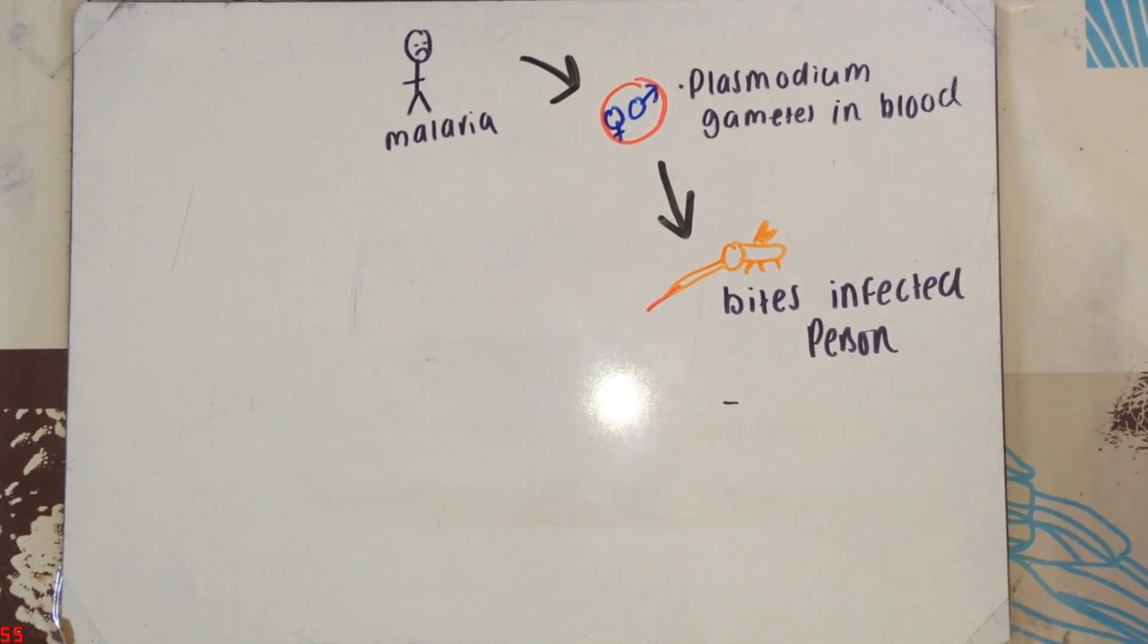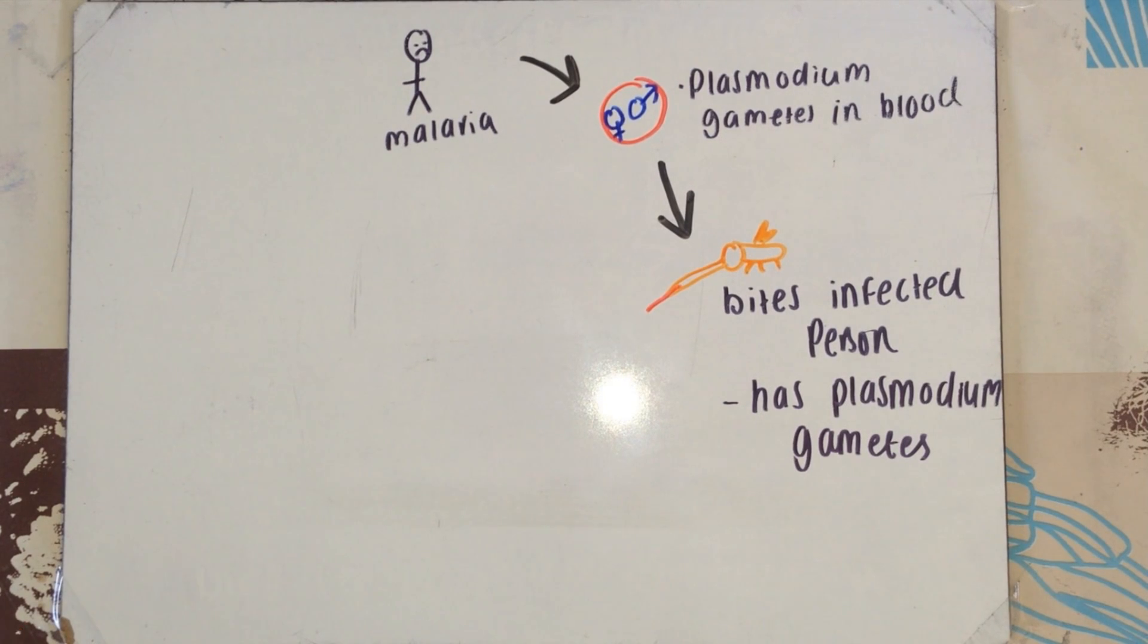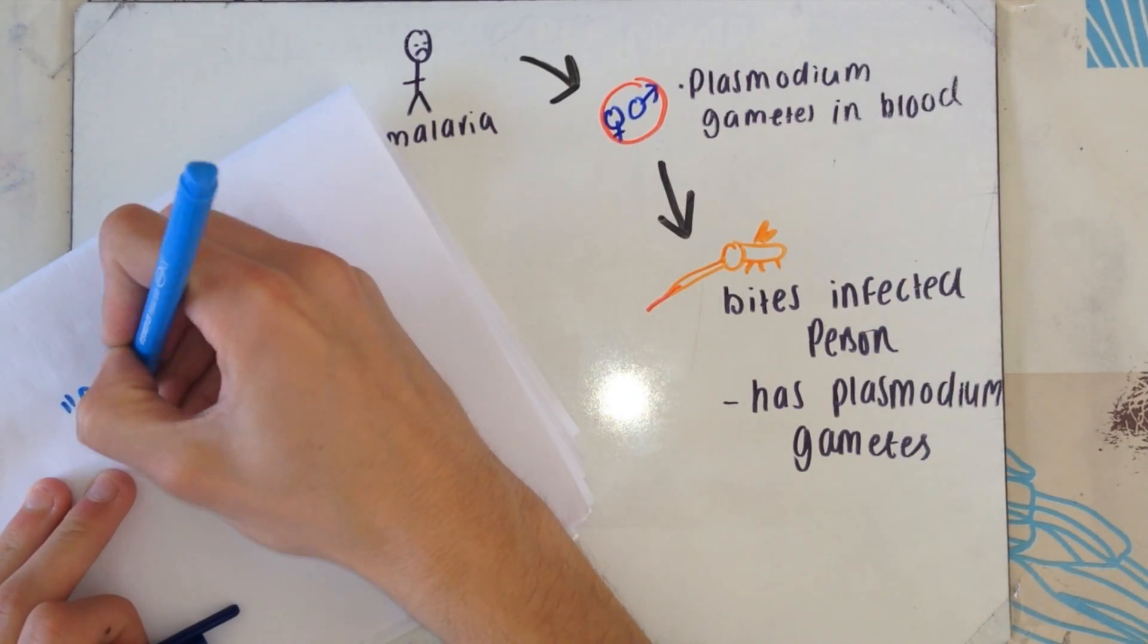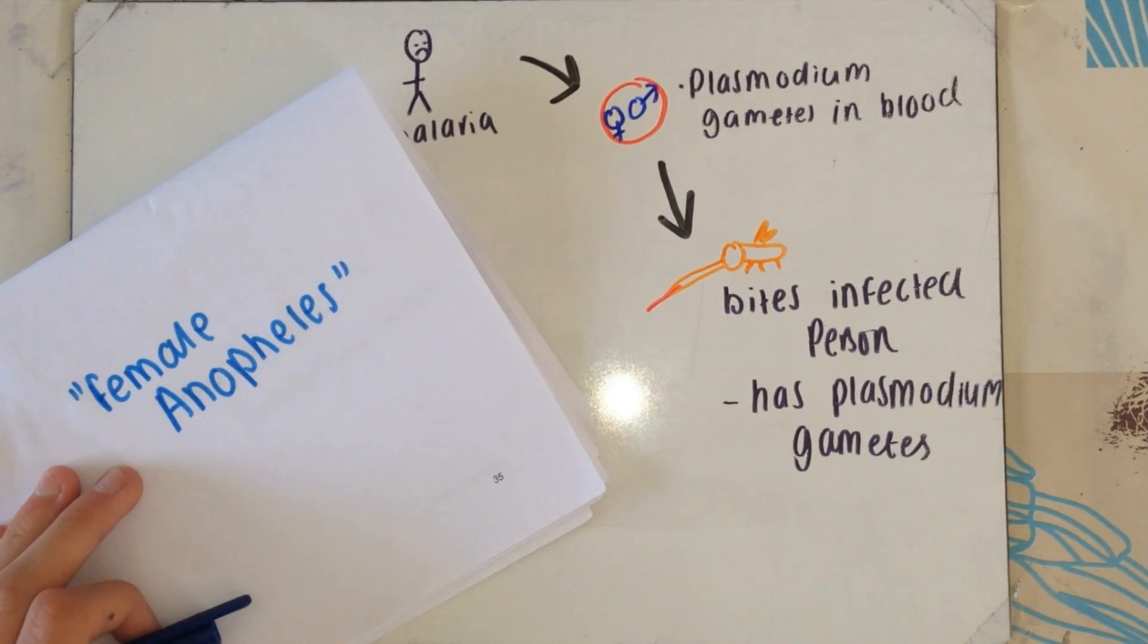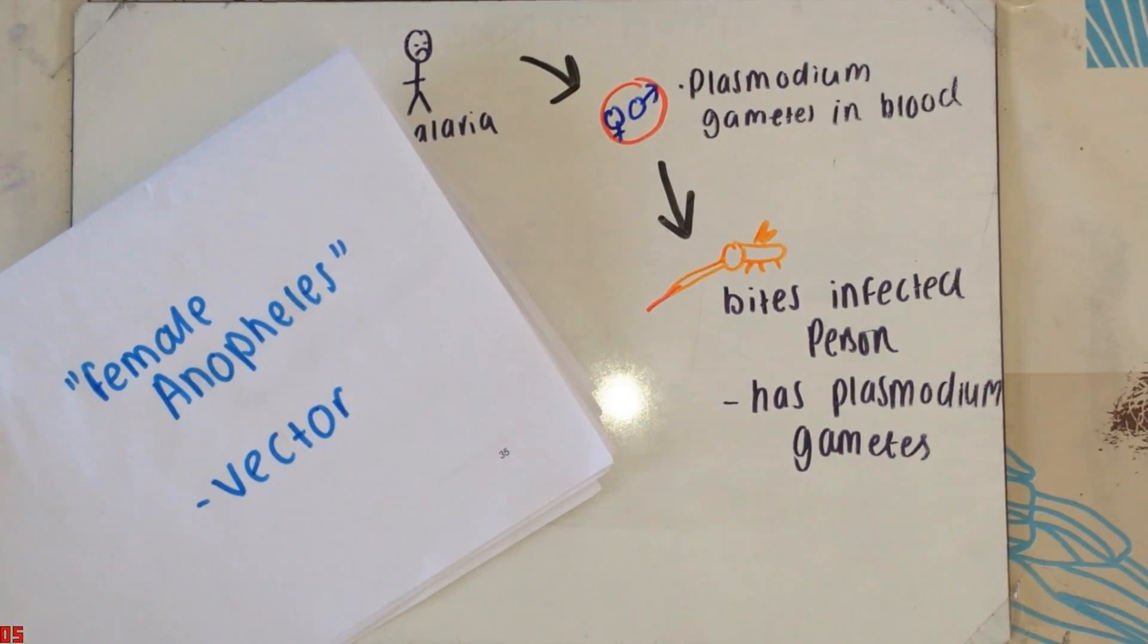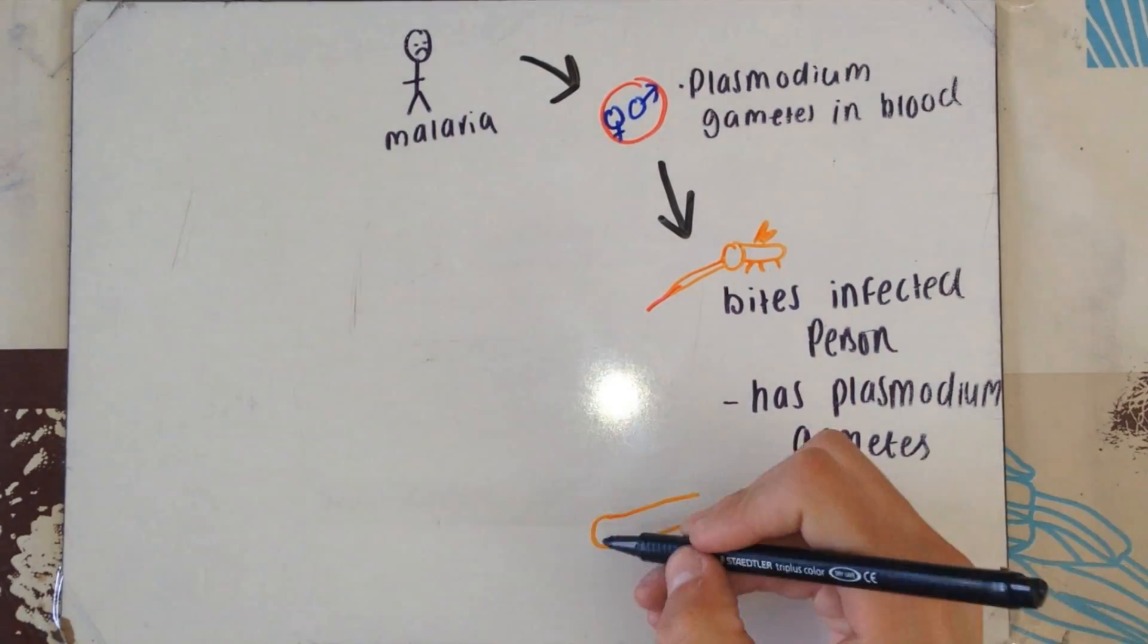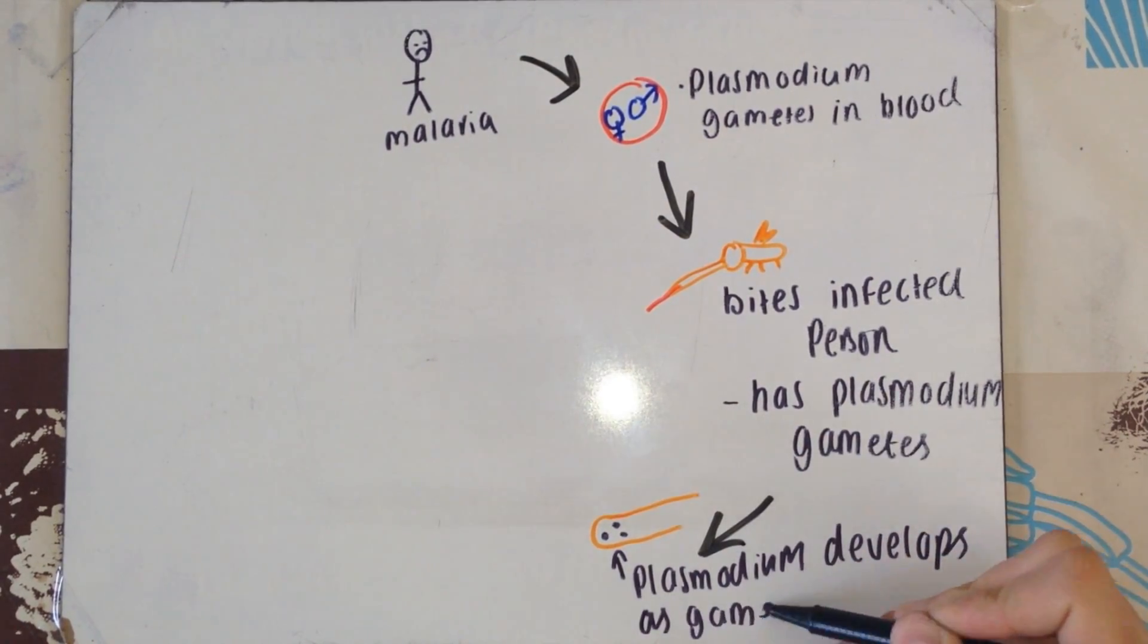So now, the gametes are inside this mosquito and inside the mosquito they start to fuse. And just quickly, in this scenario, the female Anopheles mosquito is acting as a vector. A vector is an organism that carries the disease and that can spread it, but the organism itself is unaffected by this disease. So, inside this mosquito, the zygotes fuse and then migrate to the salivary gland in the mosquito.